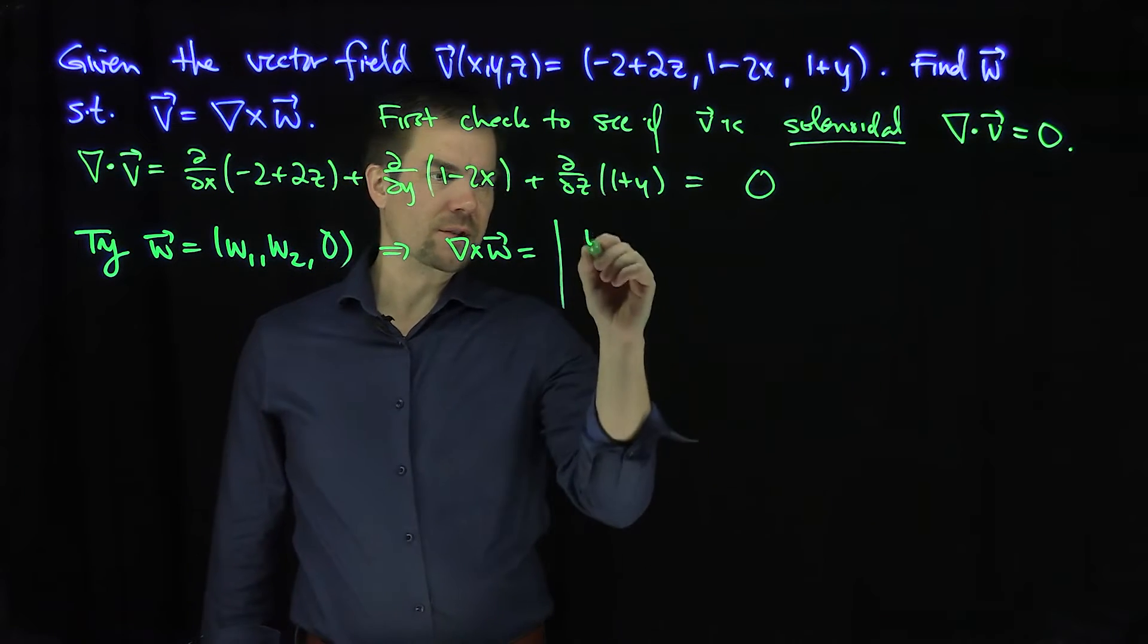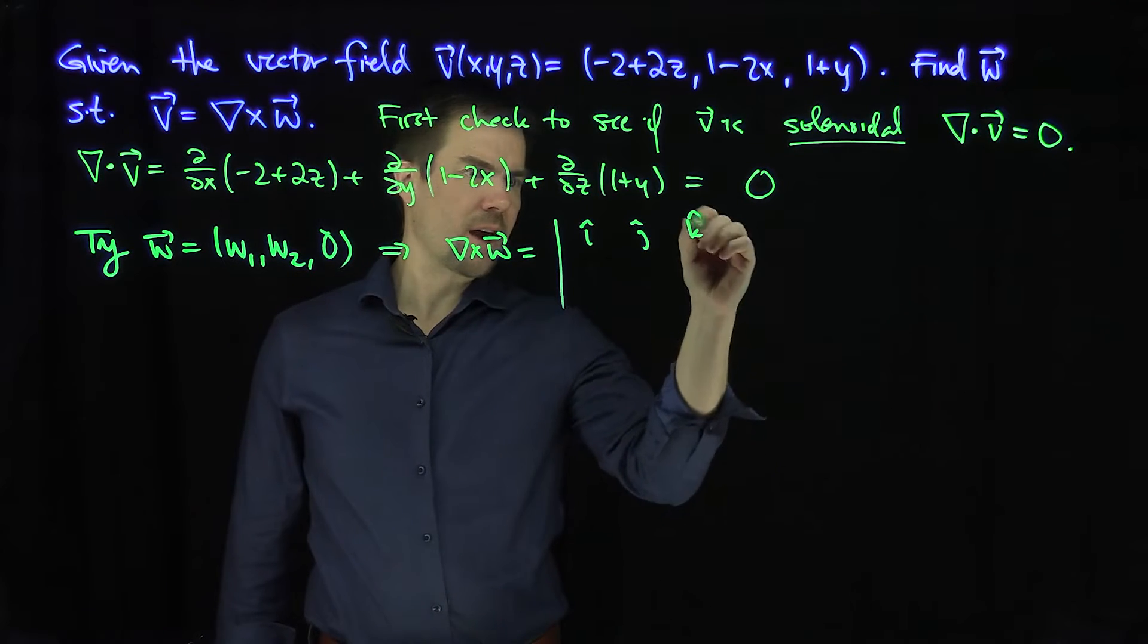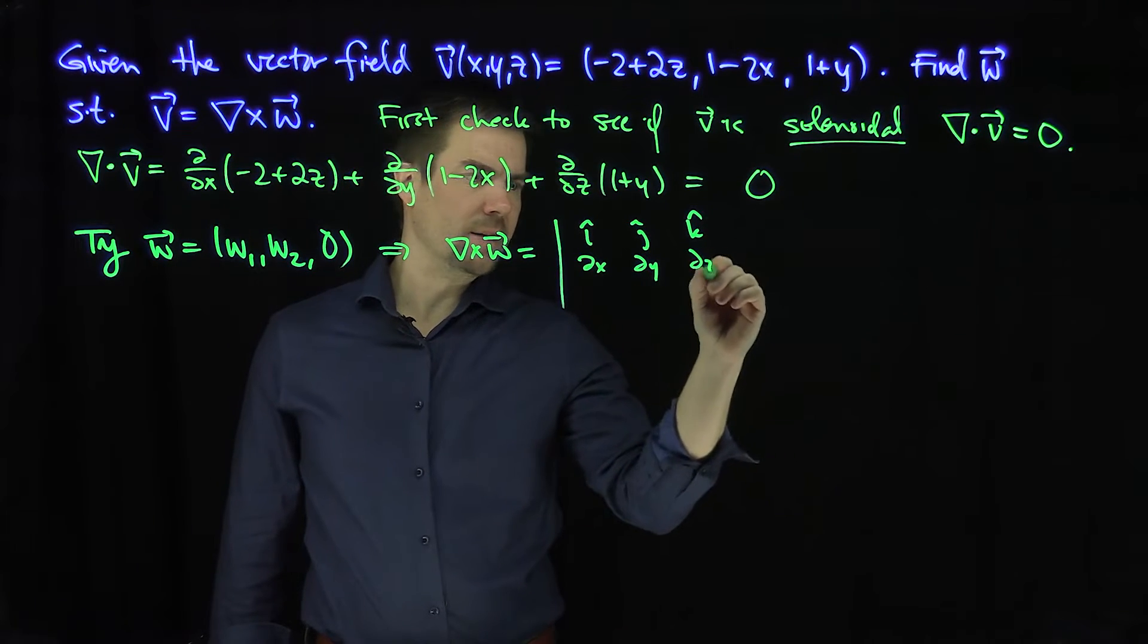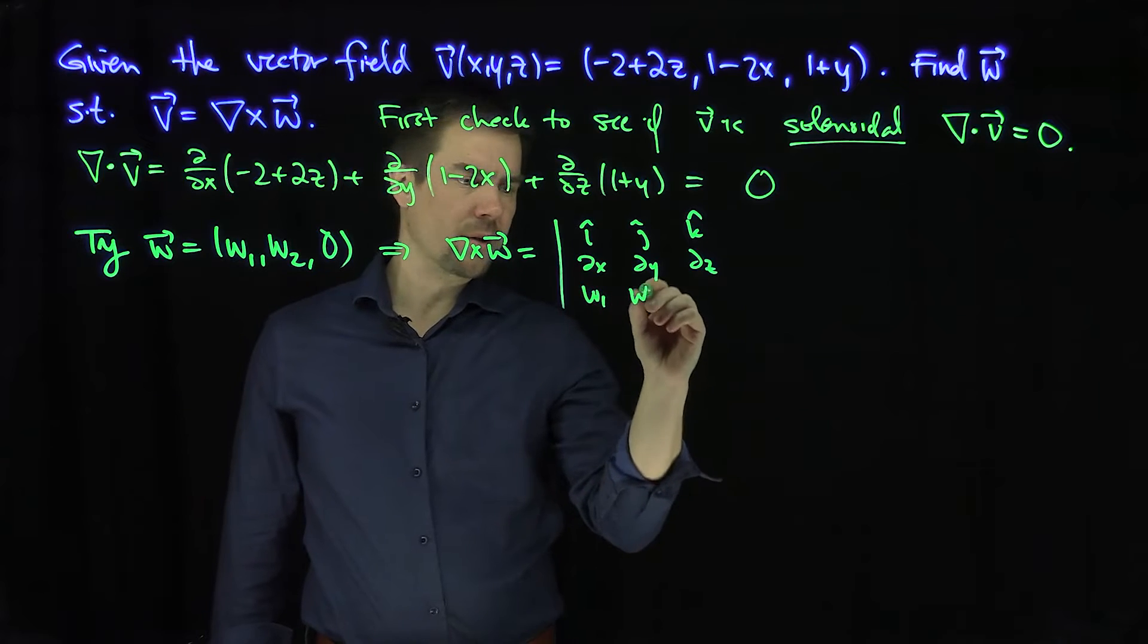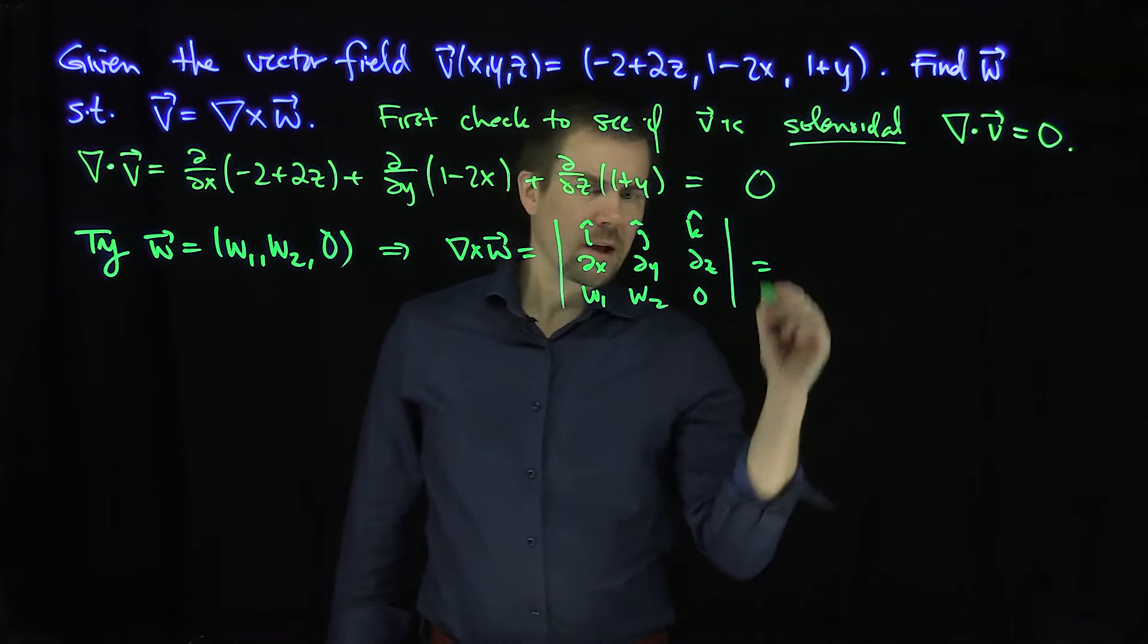The curl of the vector field w is i, j, k, d by dx, d by dy, d by dz of w1, w2, and 0.